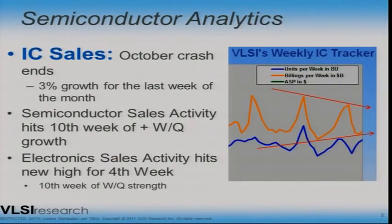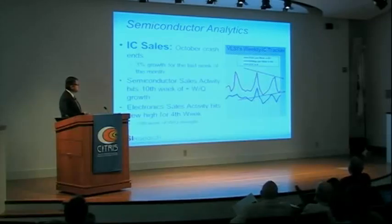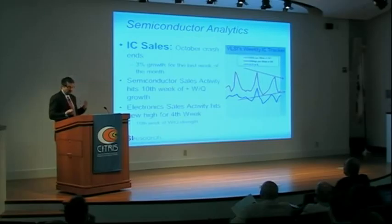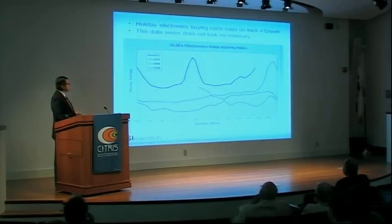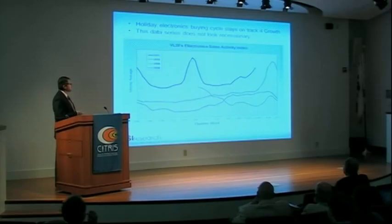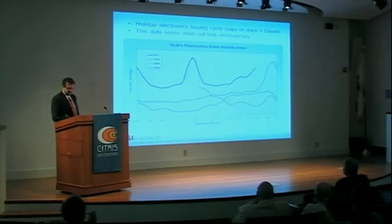Everybody expects me to talk about the market itself. We have a semiconductor analytics service that comes out every week. What we've seen is that last week we broke the October crash — you always see a fall off after September in the business — and things actually look pretty good. We're starting to get a positive lower channel, and we think we're through the big problems we saw in the second quarter. Electronic sales activity looks very good. We look at what's going on in all the different websites around the world in electronics. This is 2011, that's 2010, and this is 2008 and 2009. You can see it's forming to look like a very typical holiday electronics season, so it's not as bad as what you read about.